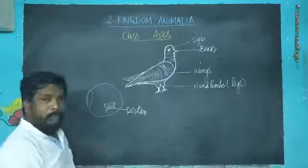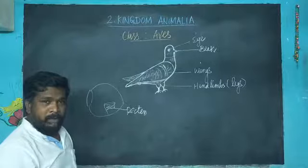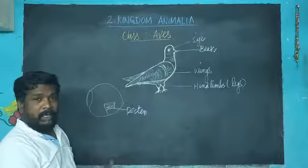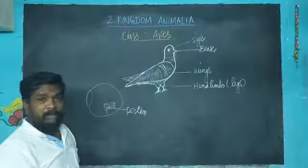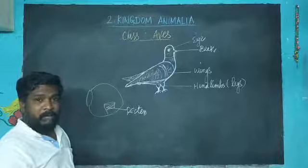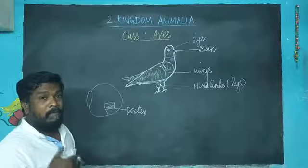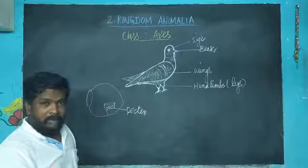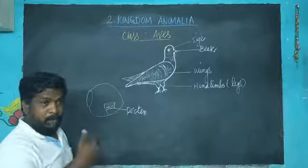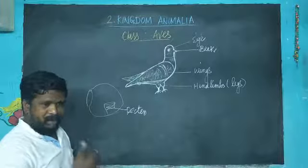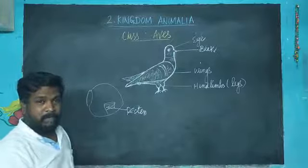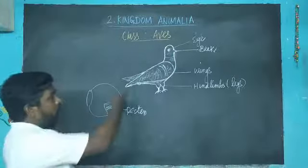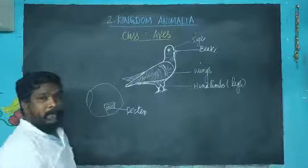The heart is four-chambered. They are homeothermic organisms — that is, warm-blooded organisms. They can maintain a constant body temperature.